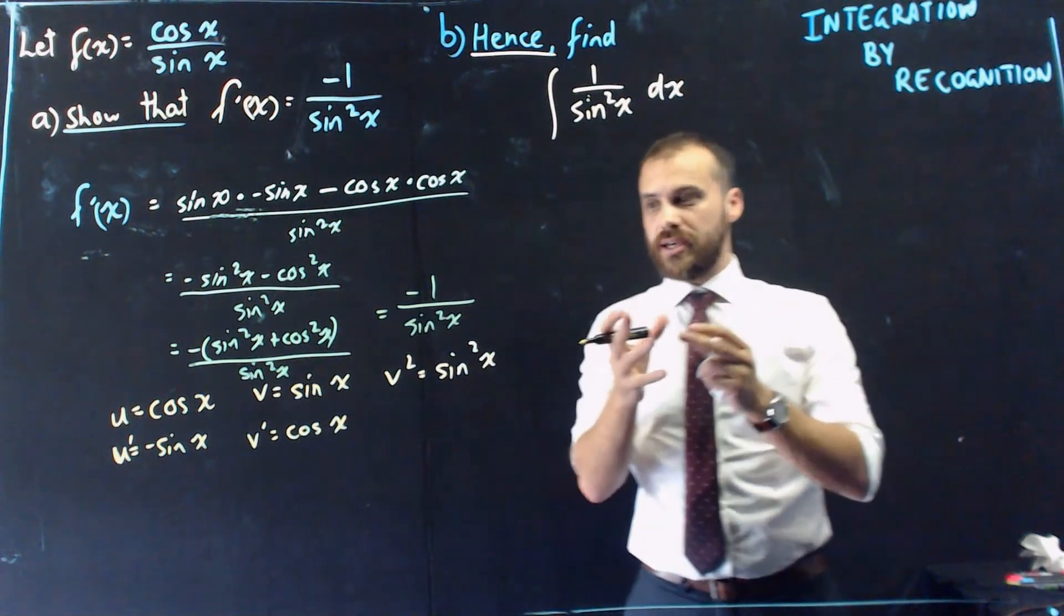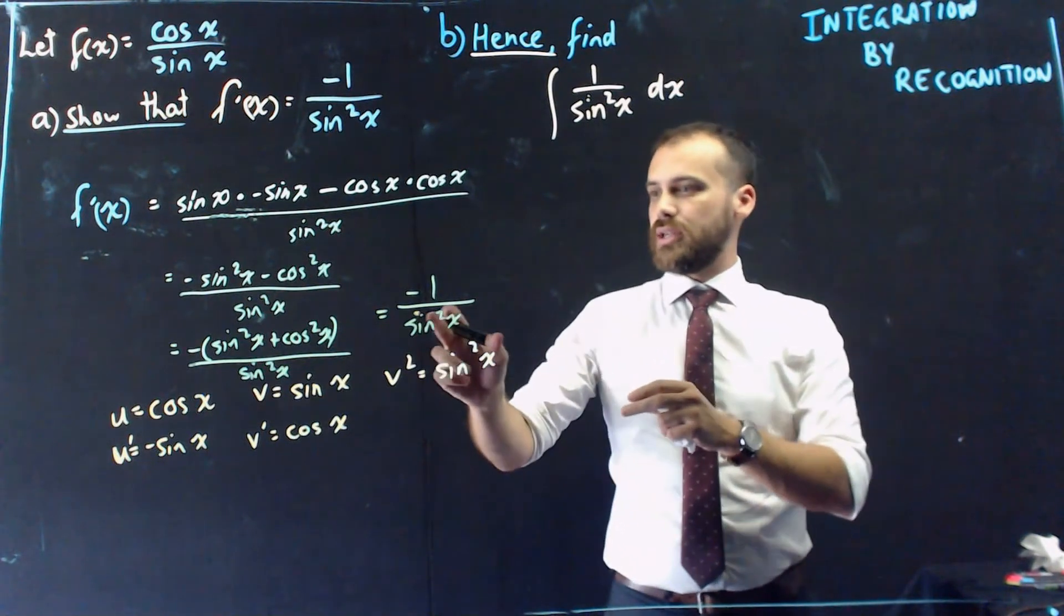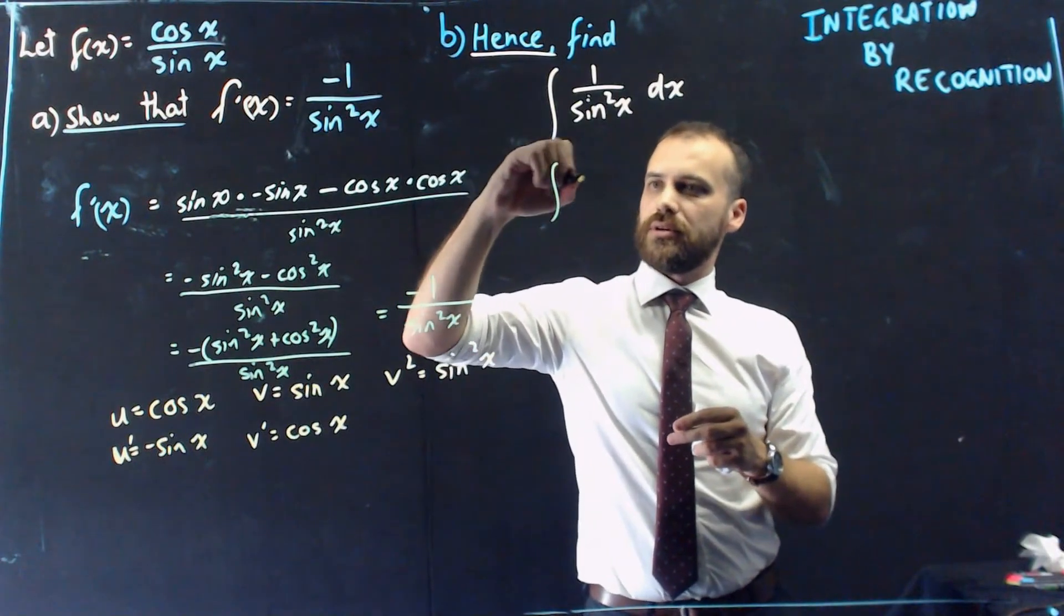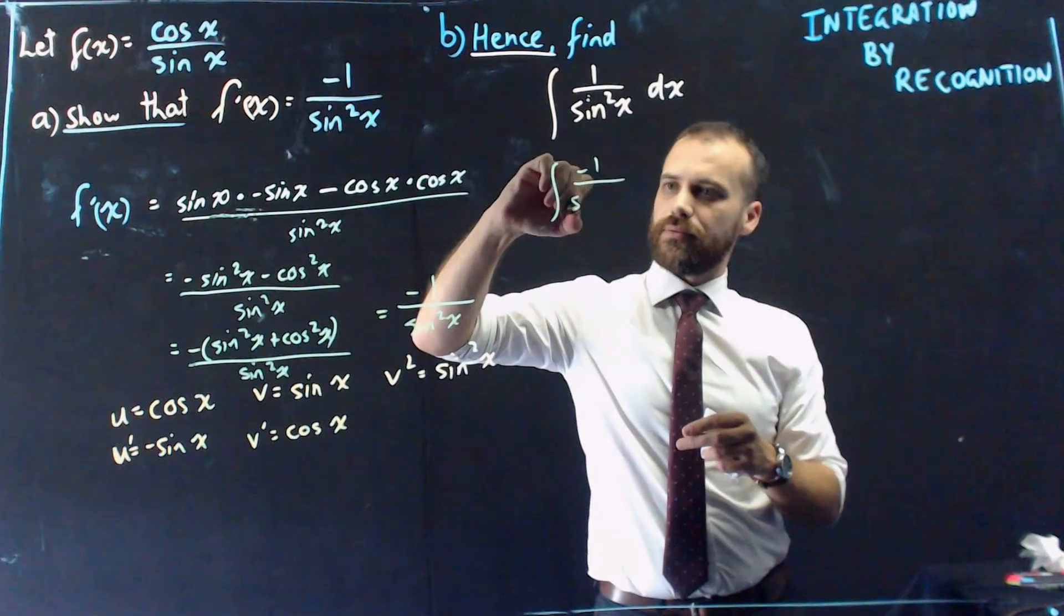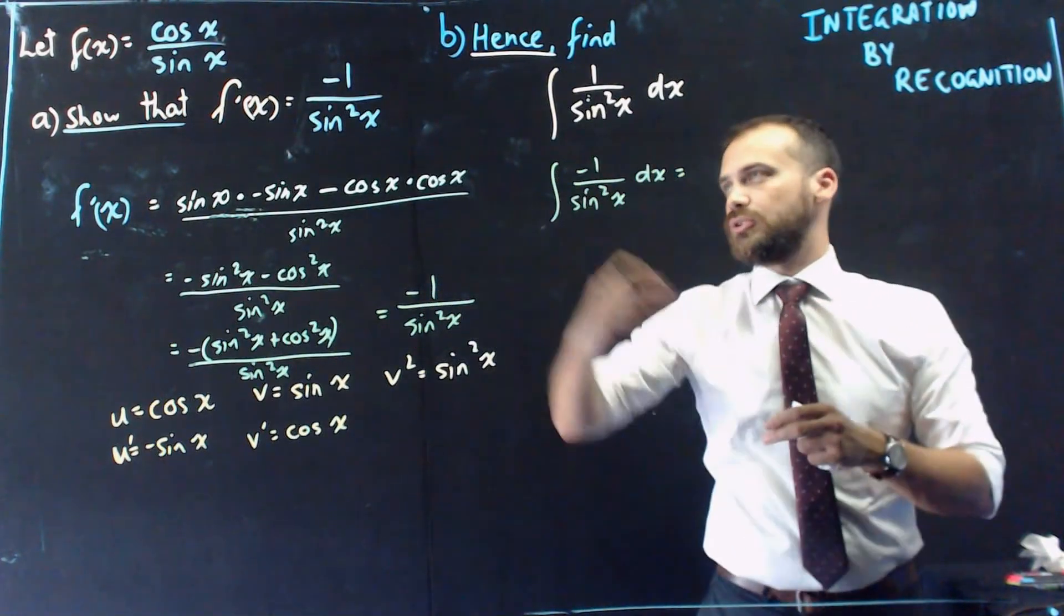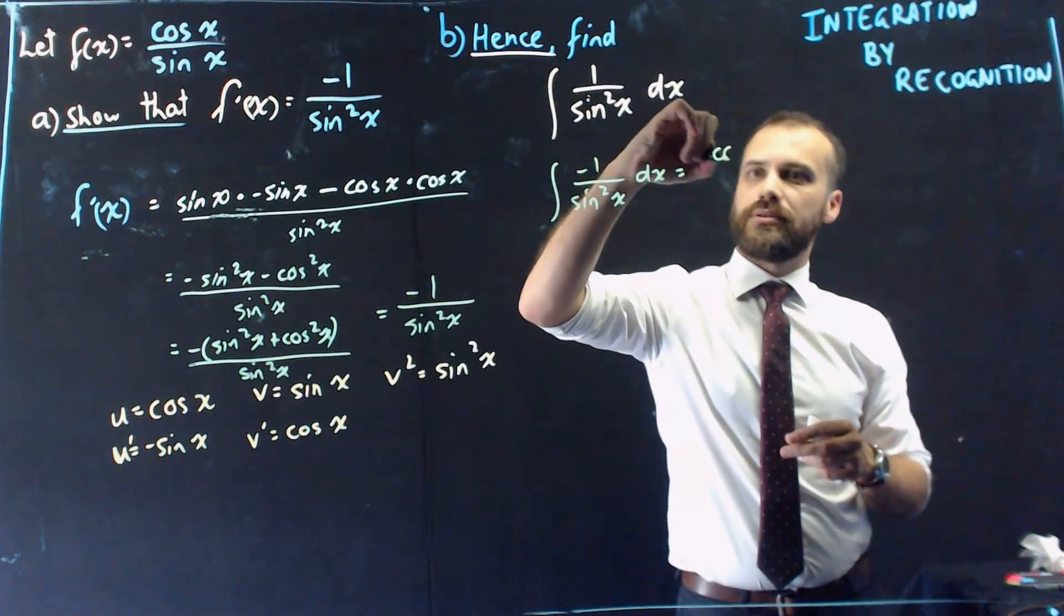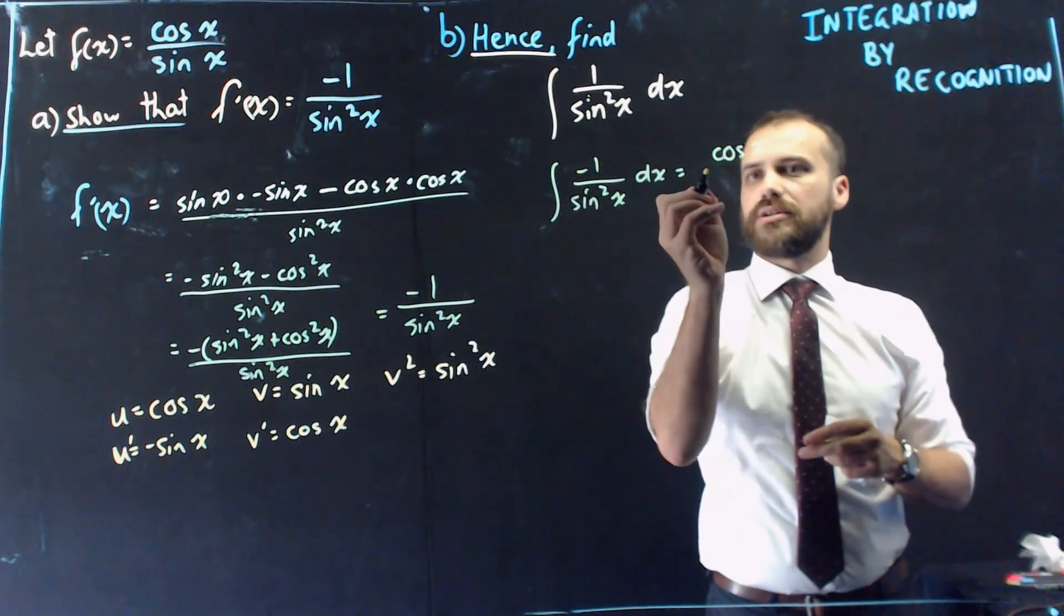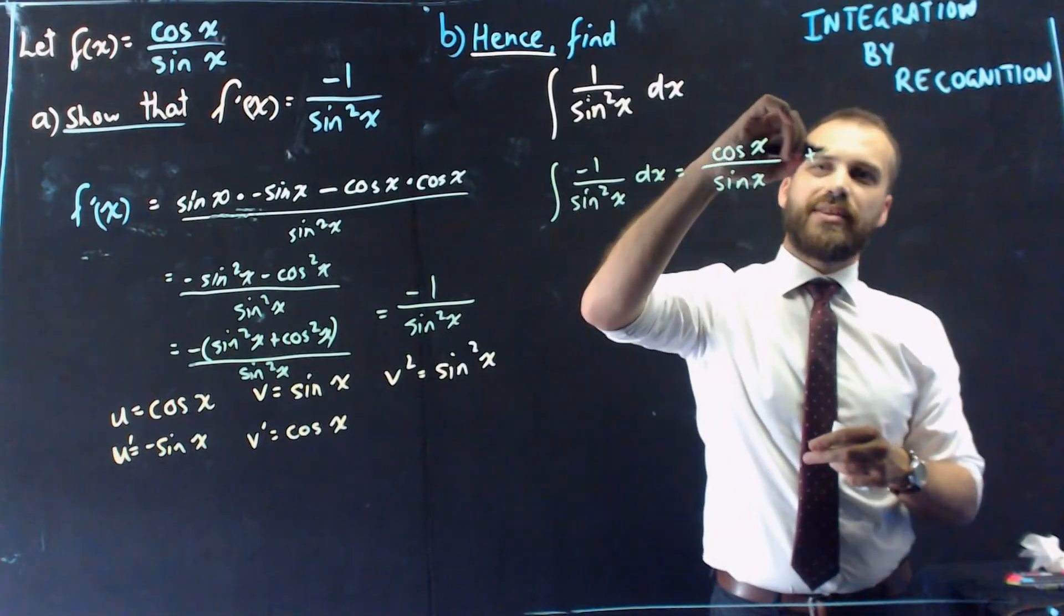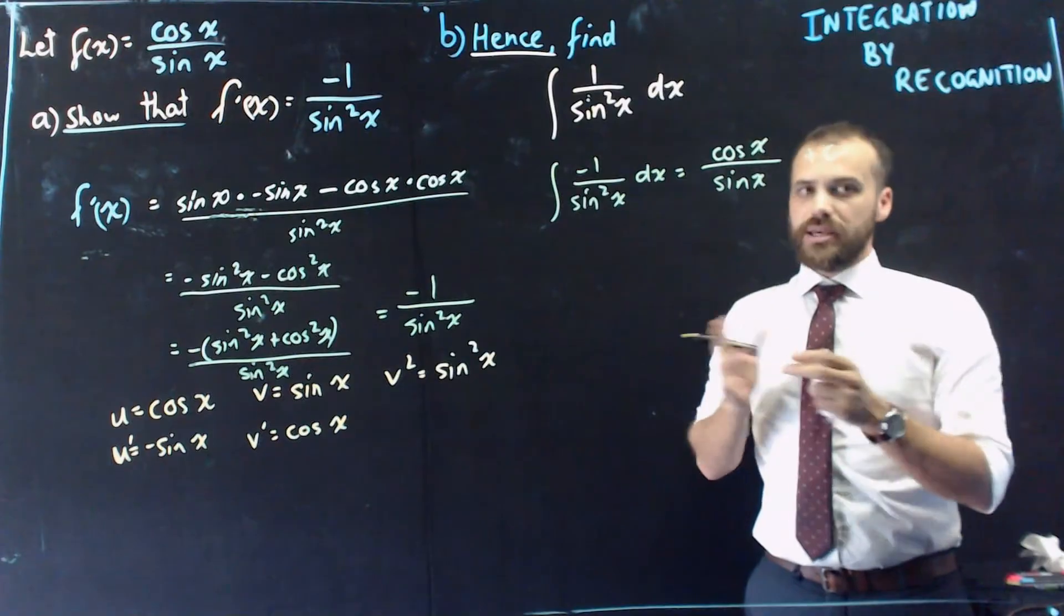From here, again, it's pretty straightforward. We can now say that the integral of the thing we just found is equal to the thing we started with: cos x over sine x. And then a plus c on the end.